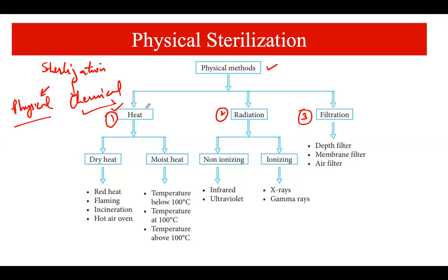The heat method is of two types: dry heat and moist heat. The dry heat method means there is no involvement of water, whereas the moist heat method means that water is present. We will be talking about all these subtypes in the coming slides.